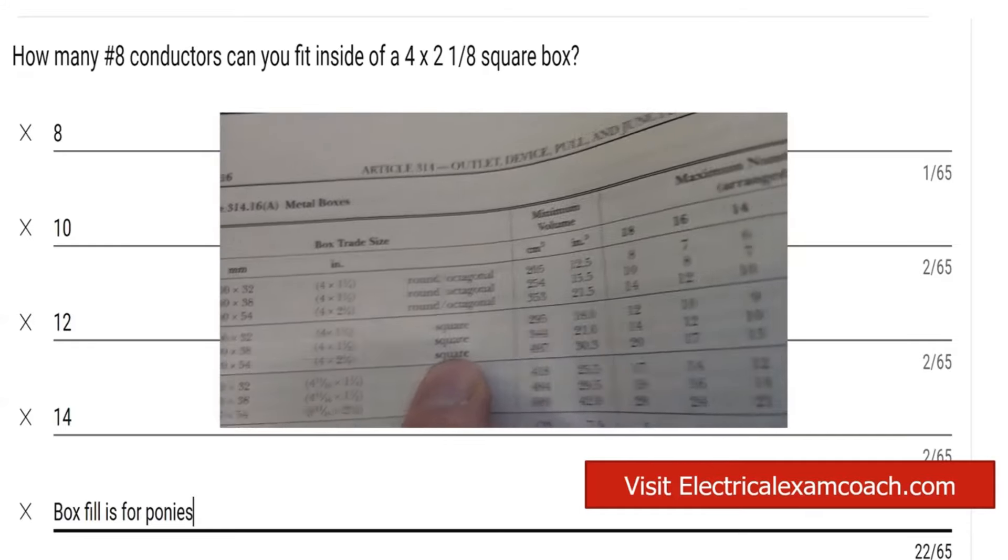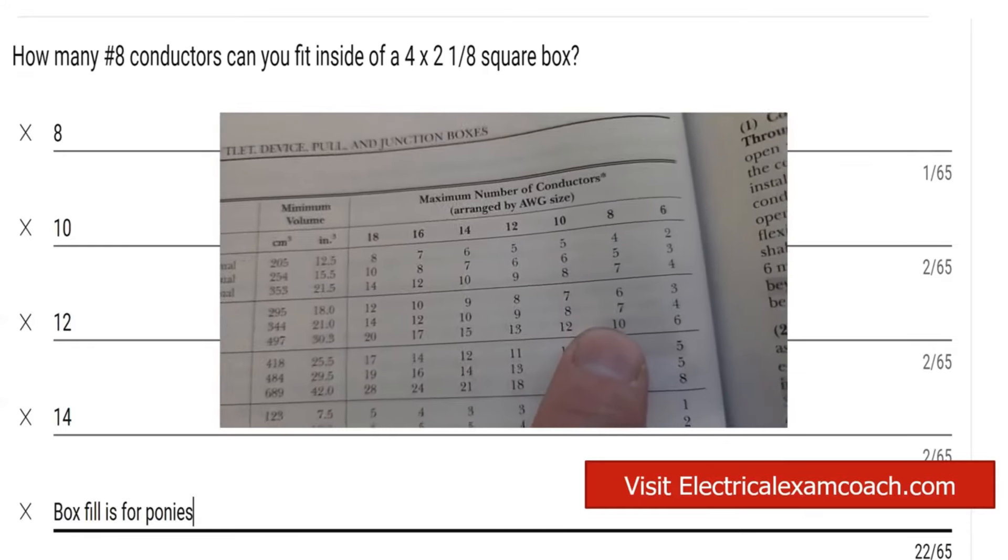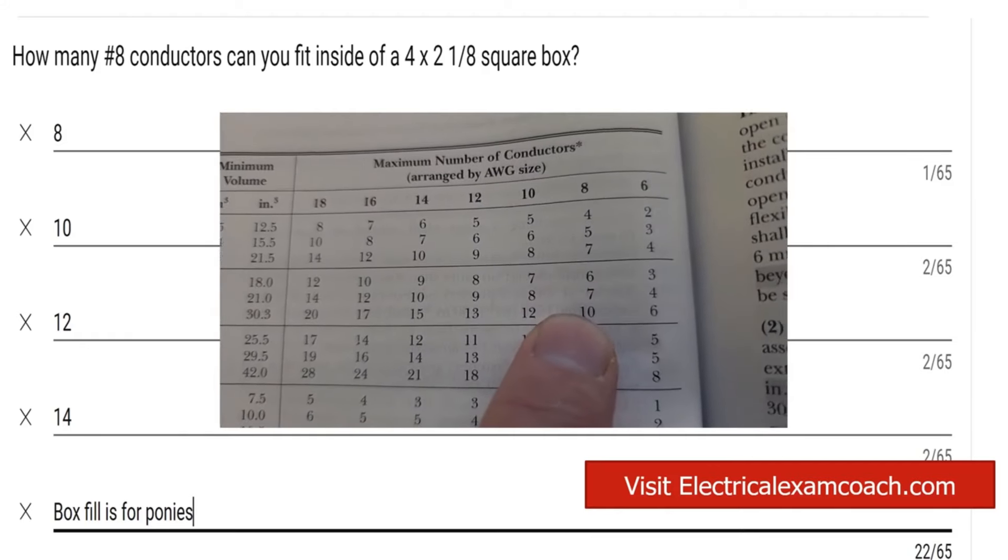We're going to come over here to the four square boxes. We're going to slide over to number eight conductor, and we're going to find that you're allowed to fit 10 number eights.